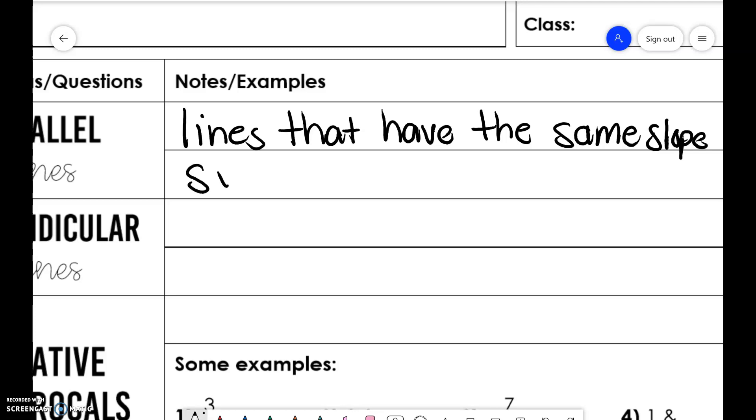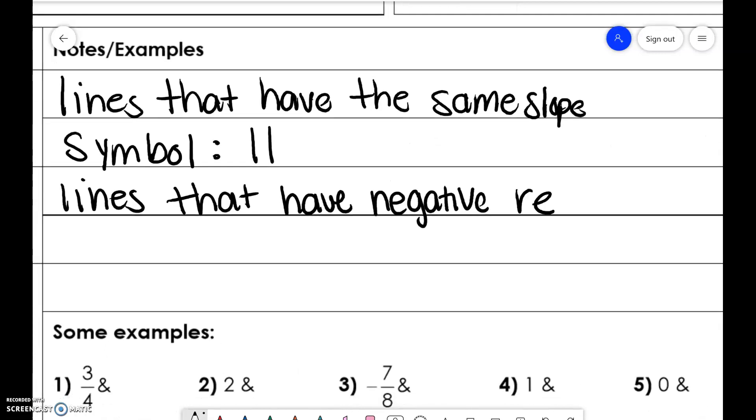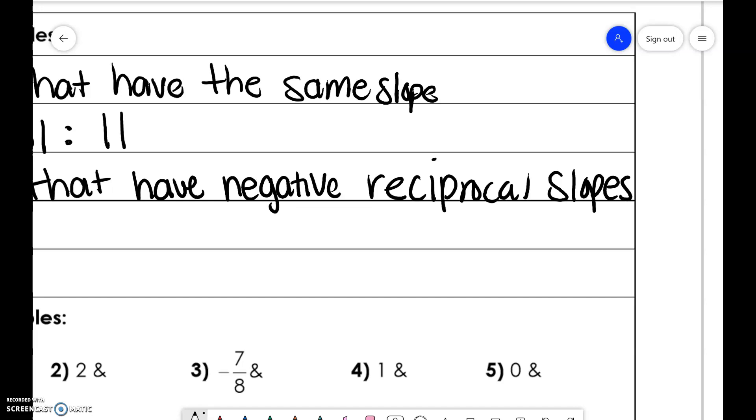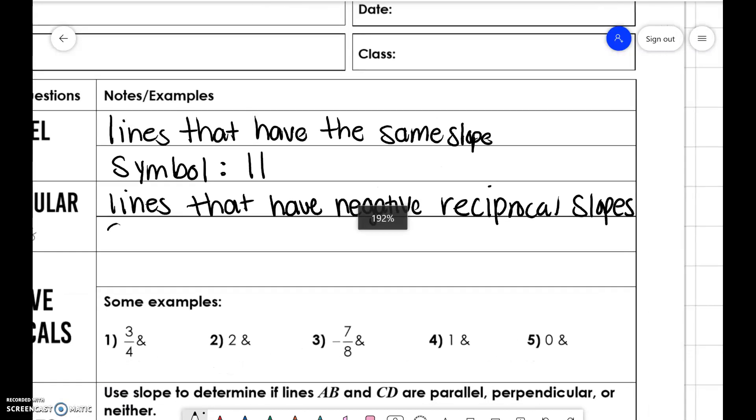The symbol for parallel is two lines that are parallel to each other. Perpendicular lines are lines that have negative reciprocal slopes, and the symbol for perpendicular is an upside-down T.